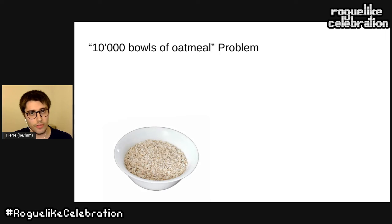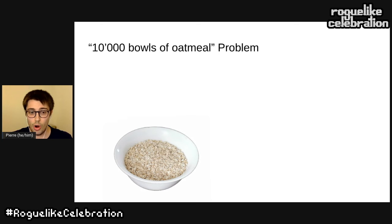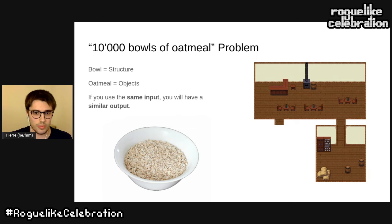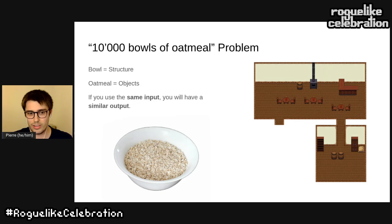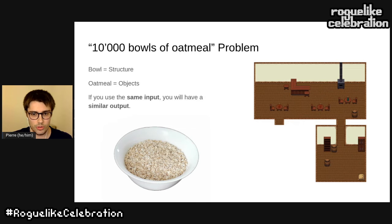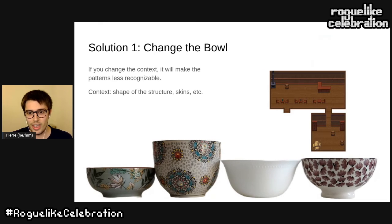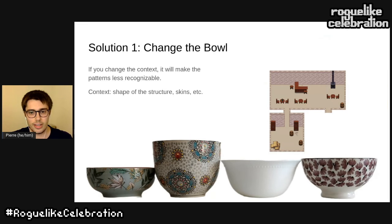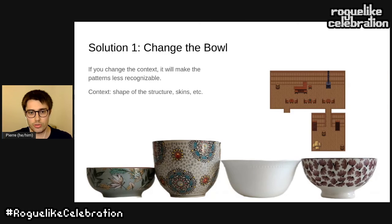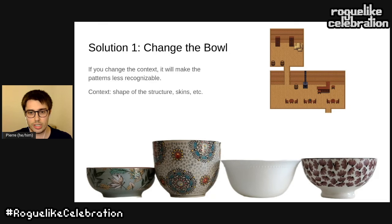So far so good, but we have an issue with a name: the 10,000 bowls of oatmeal problem. It says that we can easily generate many bowls of oatmeal by just changing the position or rotation of oats, but all the bowls will look the same. We have exactly the same issue here — the bowl is the room and the oatmeal is the objects. If we use the same input, we get very similar outputs. The idea is that if we change the context, the pattern becomes less recognizable. We can play on the shape of the structure, floor and wall textures, or object skins to mitigate this. But to truly solve it, we need to change the inputs: don't overuse a room template — especially for nearby rooms; use many alternatives and optional objects for variability; and if possible, use a higher-level generator to produce more varied or meaningful inputs.